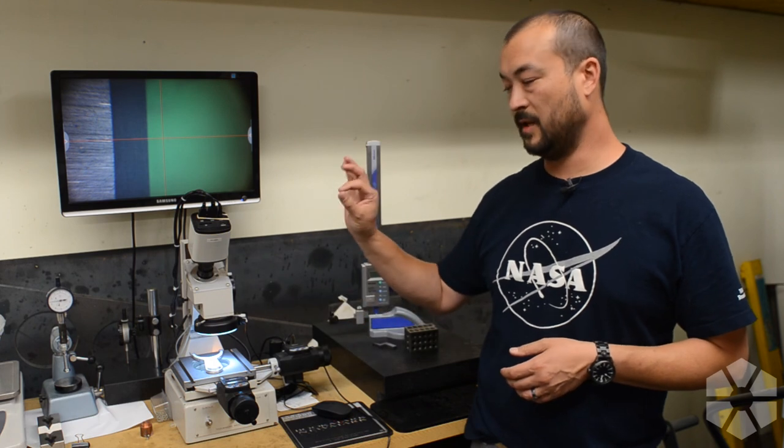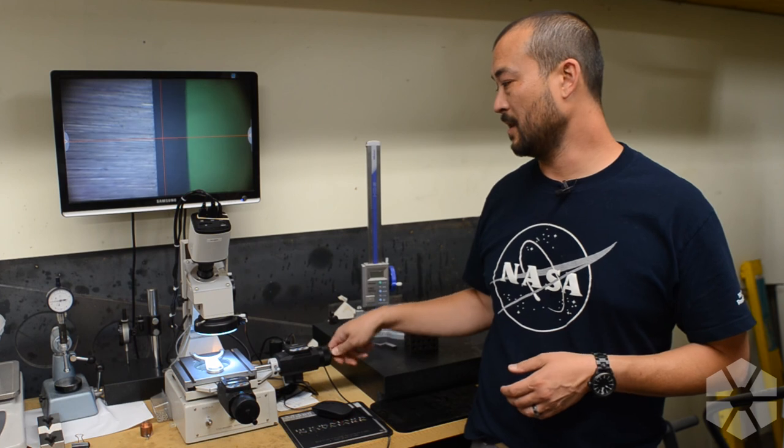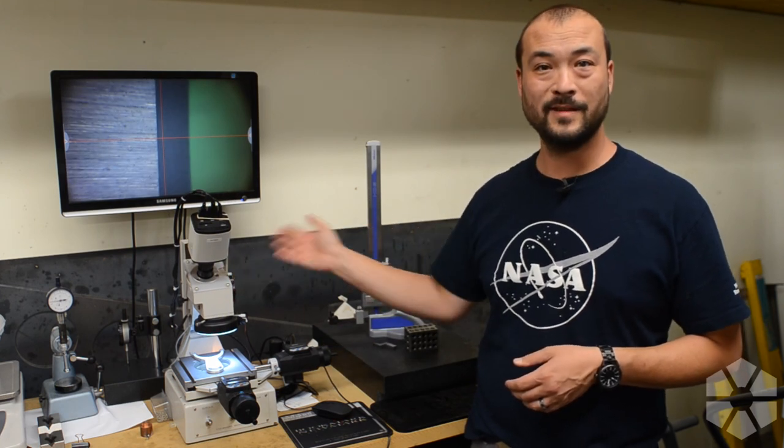This has a very thin focal plane. So if you're trying to measure something, you often have to adjust the focus up and down, which is no big deal. There's a knob right here just for that purpose.